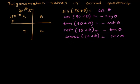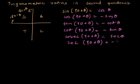Then sec of 90 plus theta — sec is negative in the second quadrant, so it's negative, and because of this 90, sec becomes cosec theta.